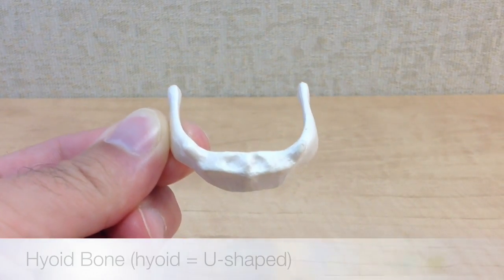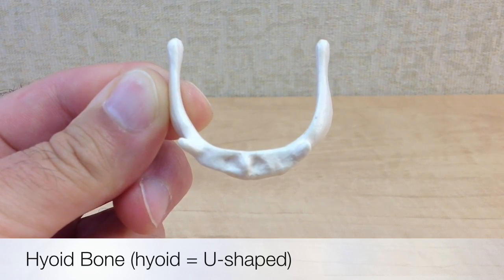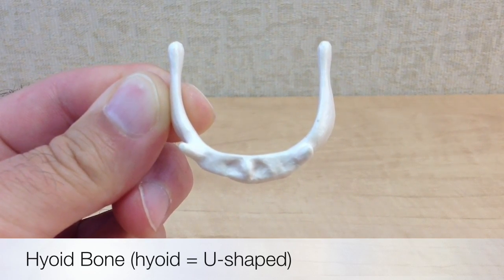The hyoid bone is a unique U-shaped bone of the axial skeleton. It resembles a horseshoe in its appearance.